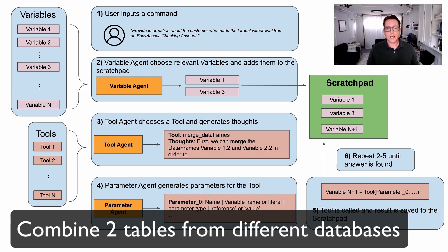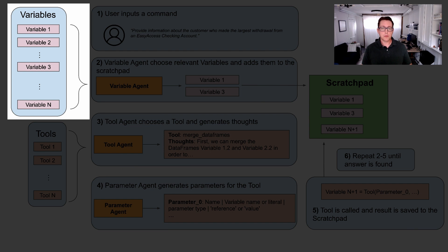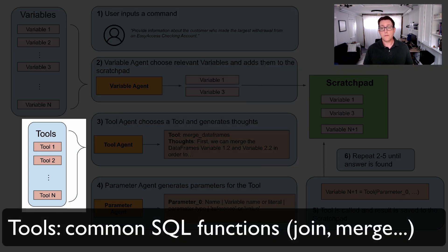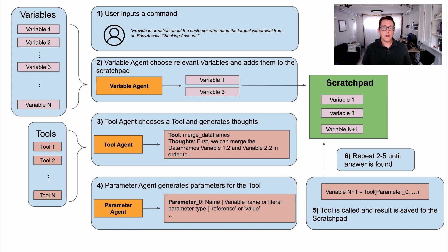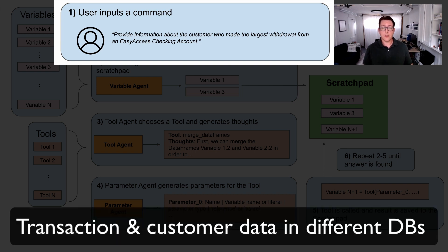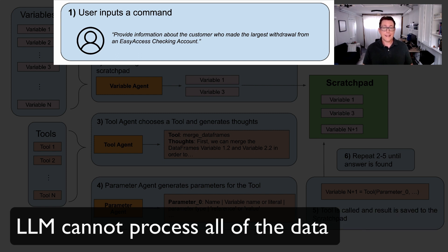Can you walk us through an example workflow using variables and tools? For this example, let's say that we want to combine two SQL tables that are stored in separate databases. The variables will contain the data — the tables — from each of the two databases. The tools will be functions that we can call on those table variables, like join or merge, filter, etc. For a banking example, the question may be: provide information about the customer who made the largest withdrawal from an easy access checking account. The transaction data and the customer data are in different databases, and that makes this problem harder because we can't just dump all of the relevant tables into the LLM context.